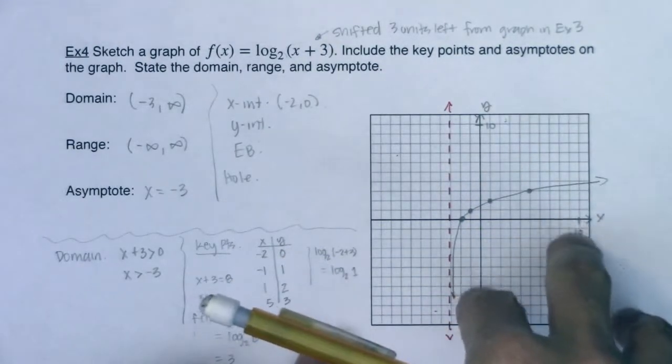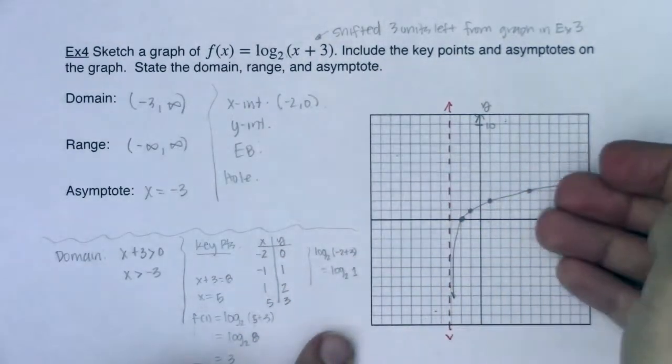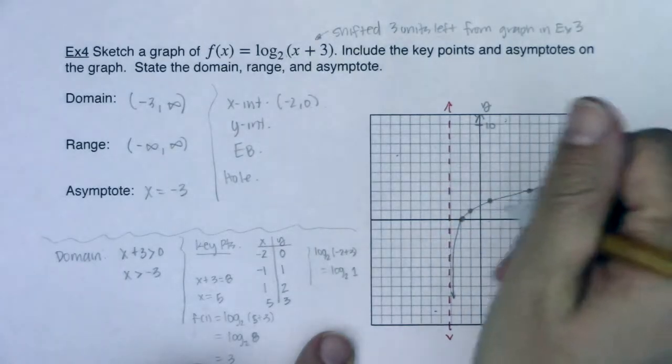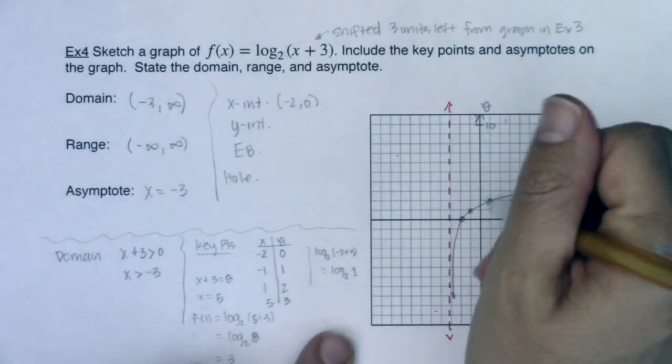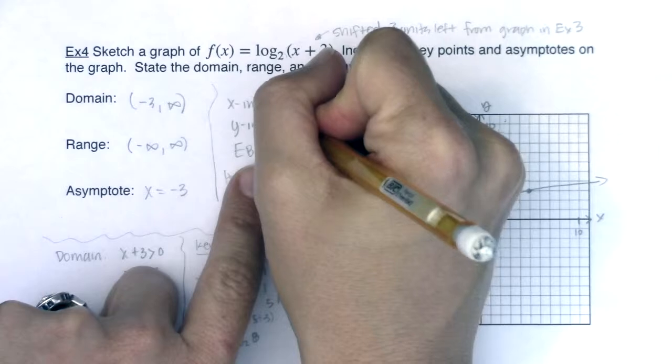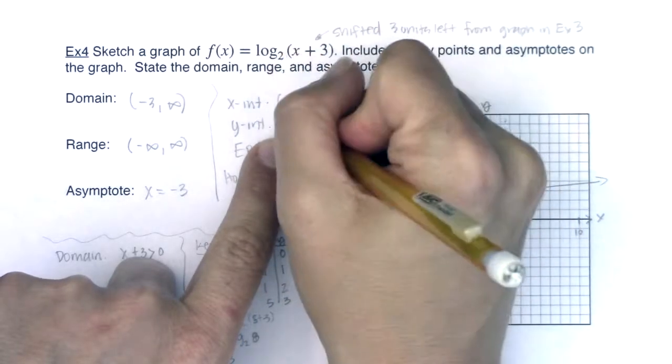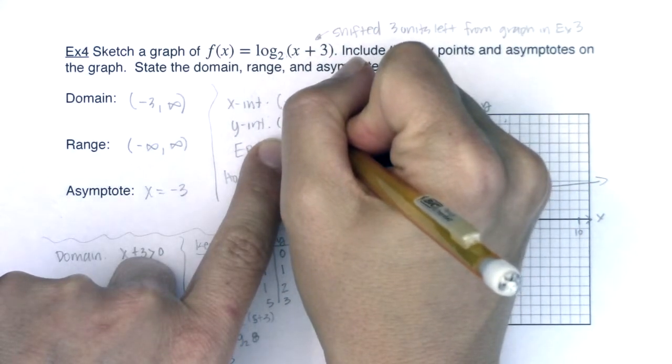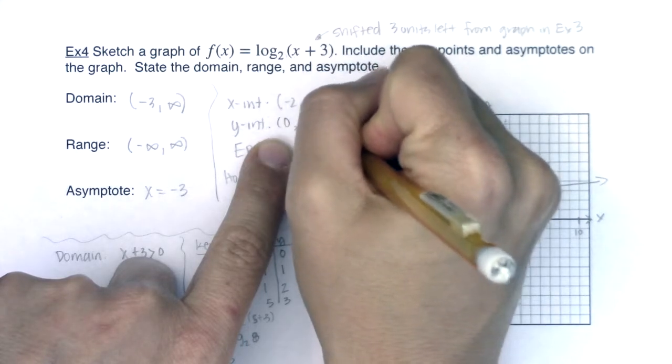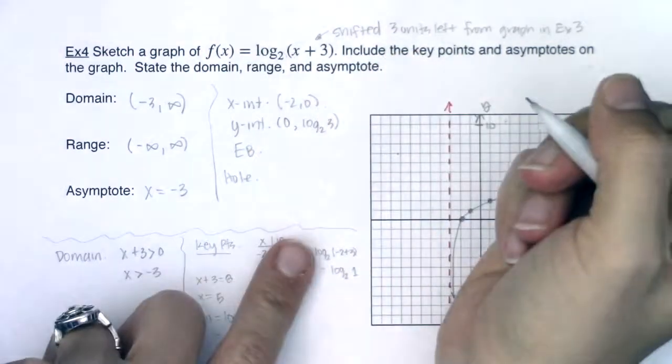Now, for the y-intercept, I actually did have a y-intercept this time out. Because this graph had been shifted 3 units left, I have this y-intercept. We can see it there. If I plug 0 in for x, I'm going to get that the y-intercept is at 0 comma log base 2 of 3, whatever that number is equal to.